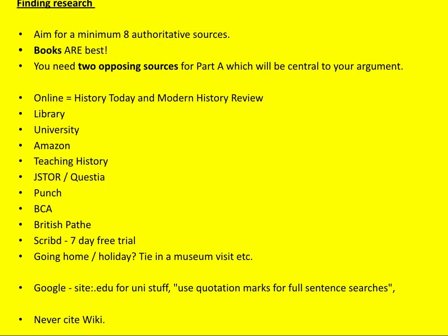You'll find lots of good stuff online. My students have subscriptions to Modern History Review and History Today. Your local library is always a fantastic place to visit, and perhaps you have a university library. Amazon is great, particularly if you've got a birthday or Christmas coming up. JSTOR is a site I really recommend — you can get six free downloads per month — and Questia has some useful stuff too. Check out the galleries at the Punch website and the British Cartoon Archive, and there are hundreds of thousands of wonderful videos at the British Pathé channel on YouTube. You can also use Scribd. When you use Google, make sure you do an educational search and use quotation marks for full sentence searches. And absolutely never, ever, ever cite Wikipedia.